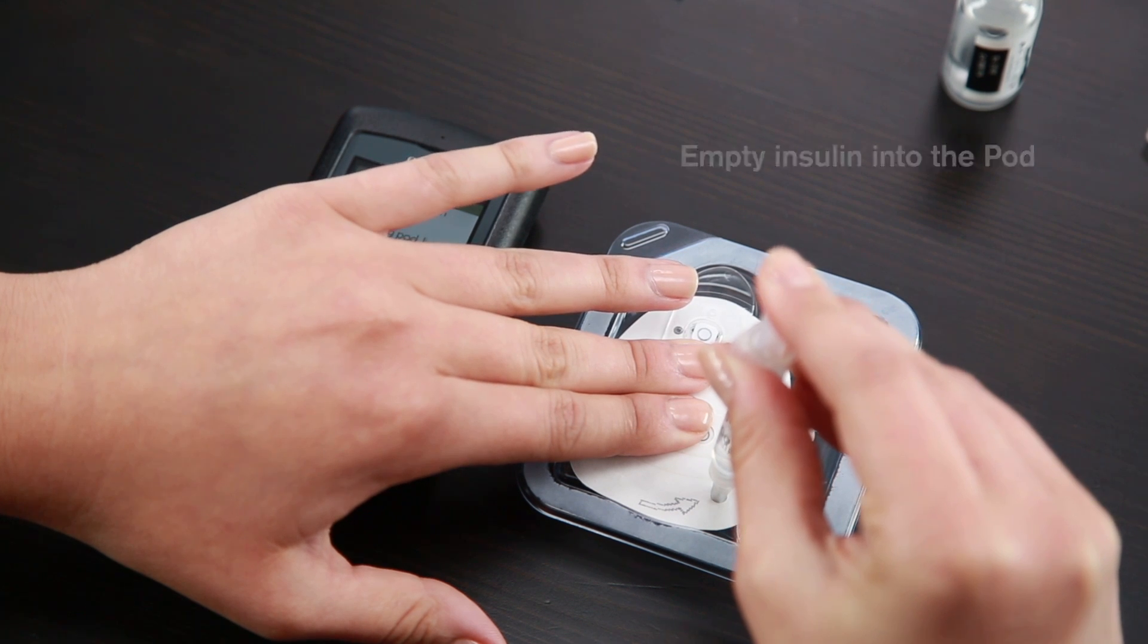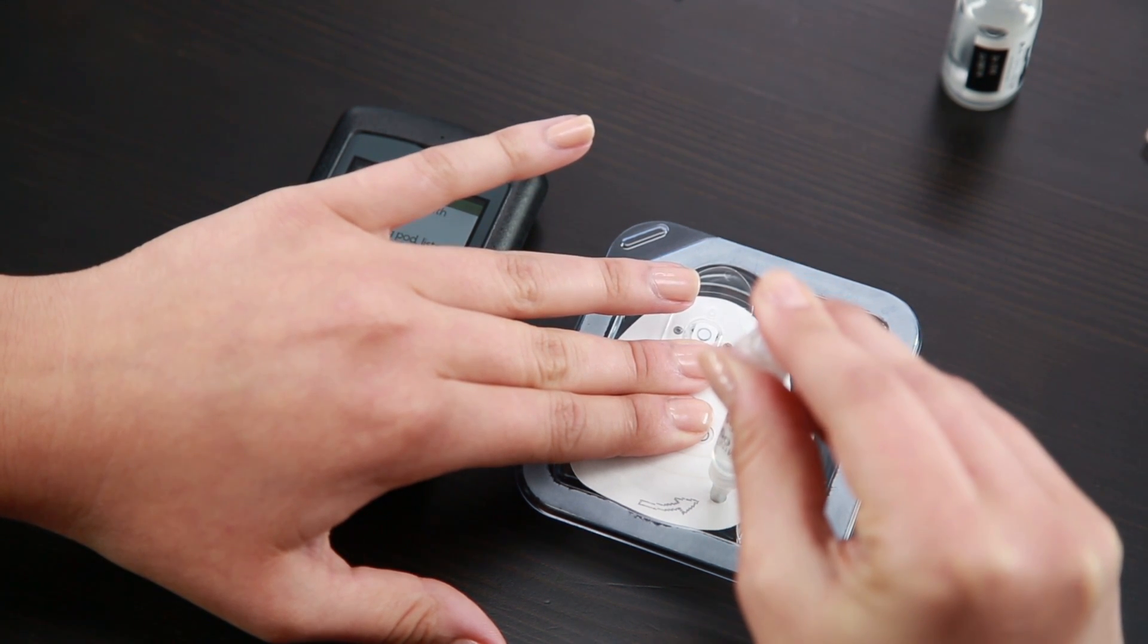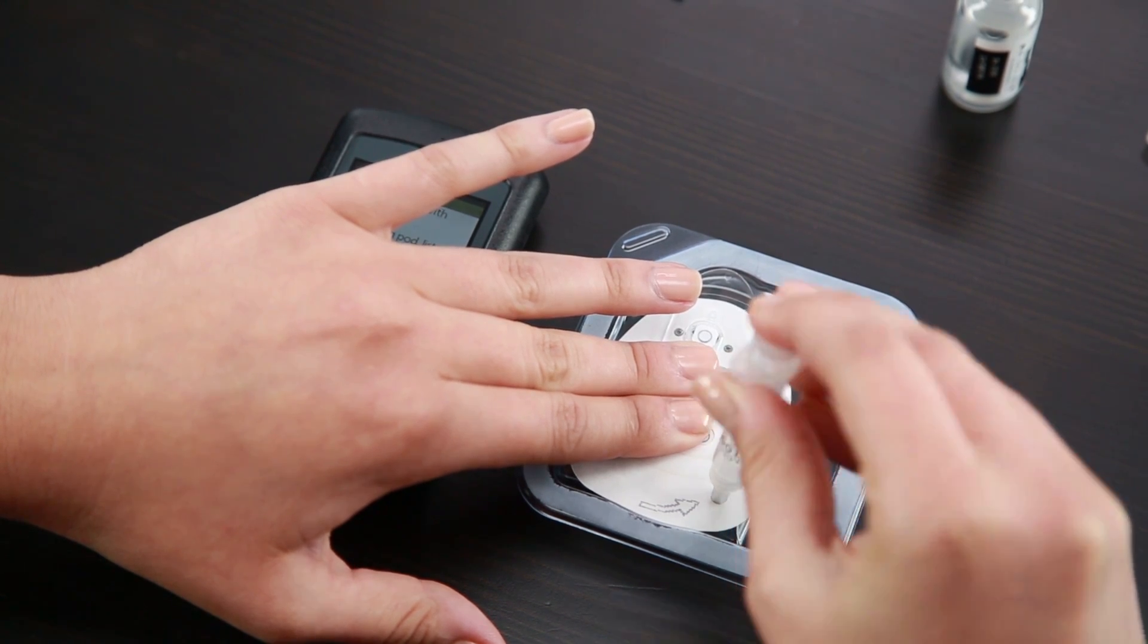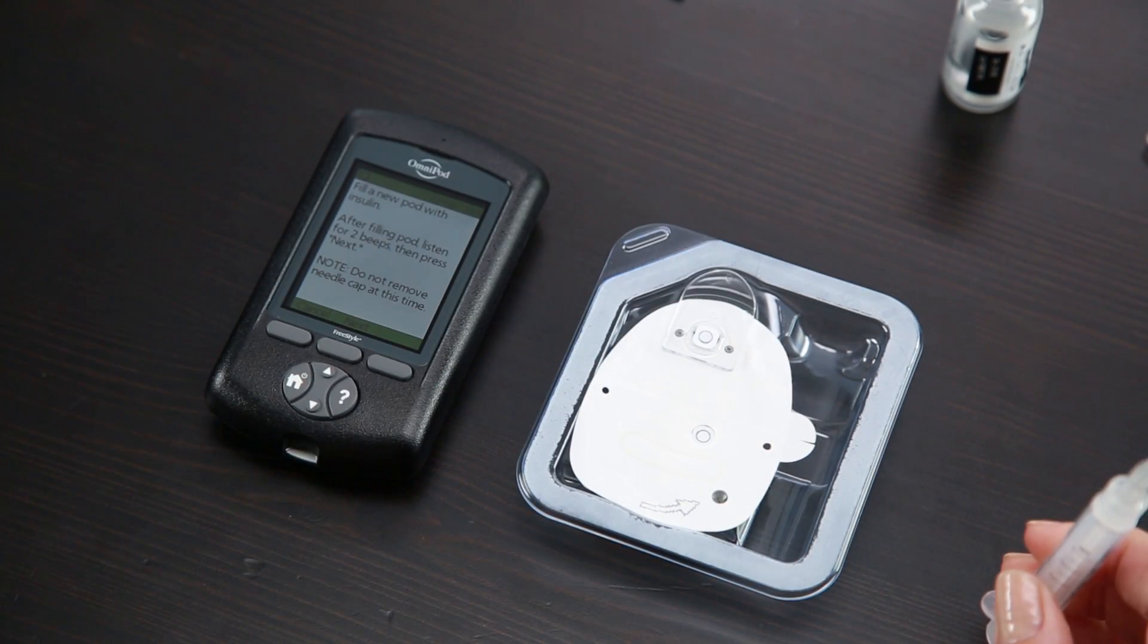If you hear two beeps and you still have insulin left in your syringe, continue filling until all of the insulin is transferred to the pod. The pod will beep twice, indicating the system is ready to proceed. Please note, it is important to hear these two beeps before you proceed.